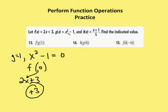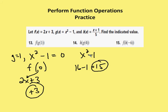Next, h of g of 4. I have g of x, which is x squared minus 1. I substitute in 4 for x — I get 16 minus 1, which is equal to 15. Now I have 15 as a value, which I substitute in for x in h of x. h of x is equal to x plus 1 over 5. So now I have 15 plus 1, or 16, over 5, and that is my result.